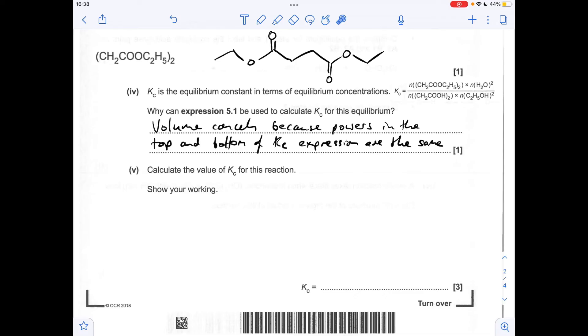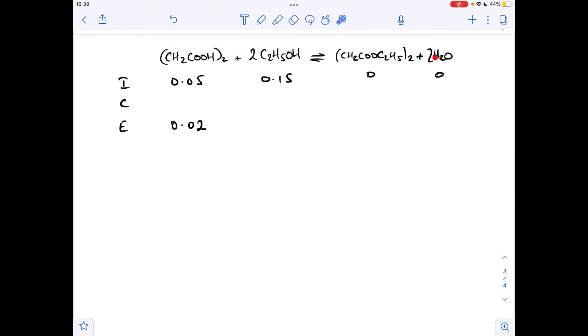So finishing off with the calculation for Kc, I don't think there's enough room here so I'll just go on to a clean page now. So that's the equation for the equilibrium we wrote a few moments ago. This is an ICE calculation: initial, change, equilibrium.